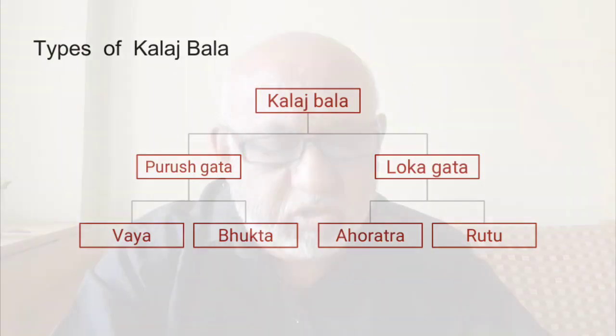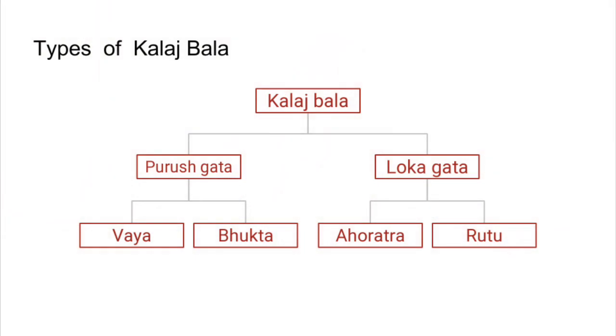We will see. You can see on the screen. There are two basic types or factors. One is Lokagata and the other is Purushagata. Purushagata are the factors which contribute to Kalaja Bala and which are specific to the person, or which are related to the specific personality, or which can be developed or reduced.